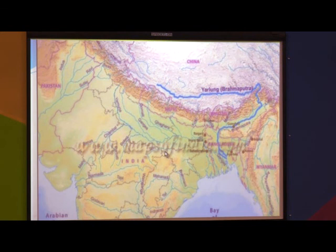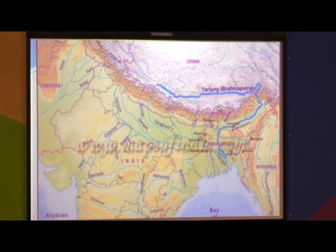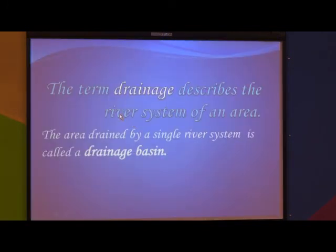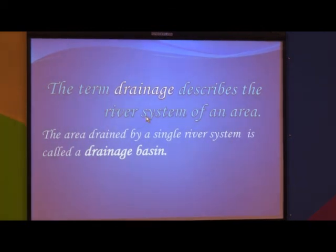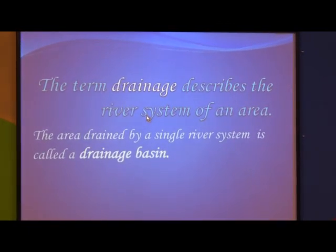First, what is the meaning of drainage? The area which is drained by a single river and its tributaries is called a drainage basin. One river and its many tributaries flow in the same direction; they drain a large area, and that area is called the drainage basin area.